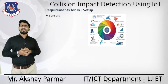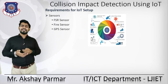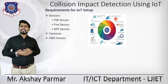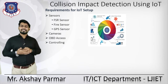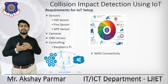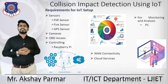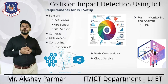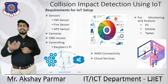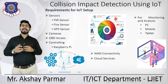Let's see the basic requirements for this IoT application. The sensor is the foremost thing required. We are using sensors like the FSR sensor, fire sensor, GPS sensor, camera sensor, and OBD sensor. For controlling, we need a Raspberry Pi. For transferring data, we need WAN connectivity and cloud services. For monitoring and analysis, we can use a PC, tablet, laptop, or any smart device or screen.